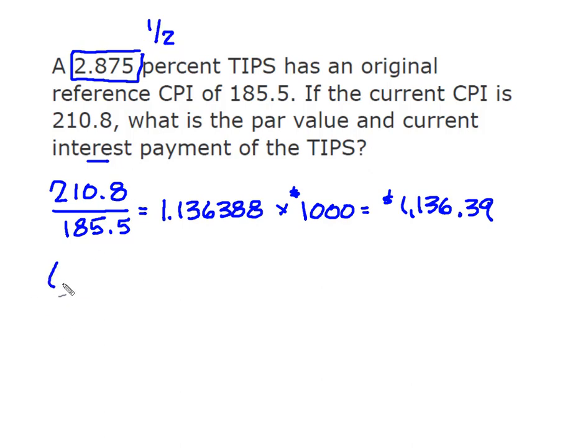And the easiest way to do that is to take 0.50 times your interest rate of 0.02875. So that's your interest payment and that interest payment is based on this current par value.